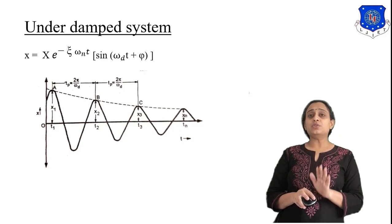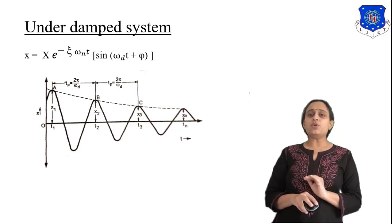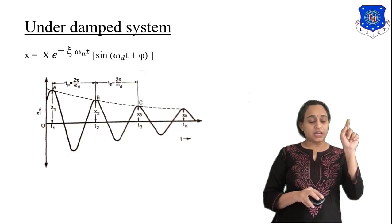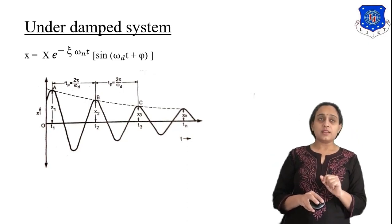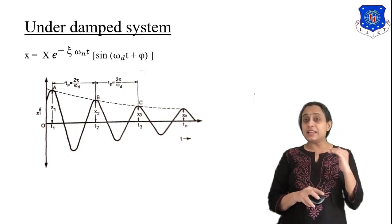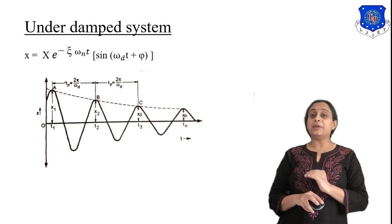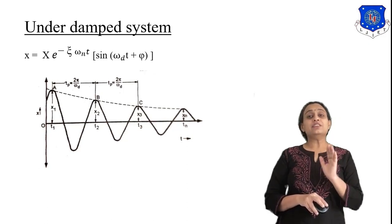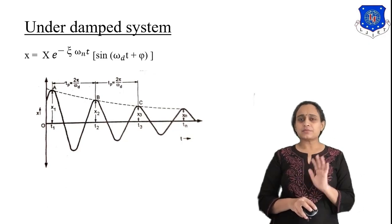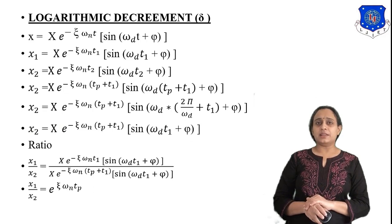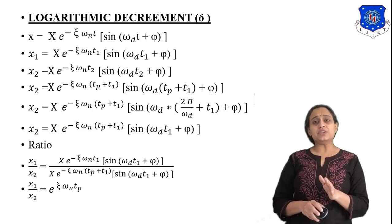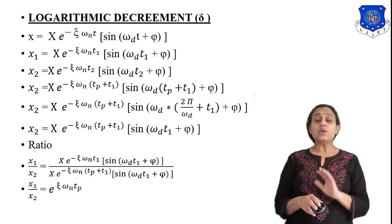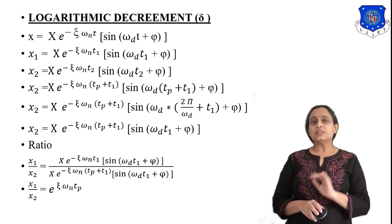Now we have to study logarithmic decrement. If we want to study the logarithmic decrement, the graph is continuously decrementing — the upper and lower portions are continuously decreasing — and the decrement value is in logarithmic form, meaning the decrement is constant. For that constant value we consider the logarithmic decrement delta. All equations are already written on screen — you can pause this video and write them down.